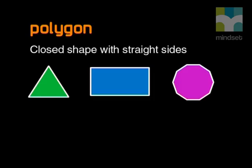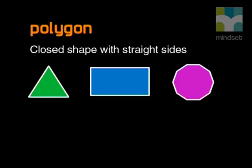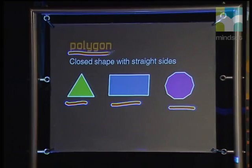First, let me remind you that a polygon is just a closed shape with straight sides. So a triangle, a rectangle, and a ten-sided shape are all polygons.